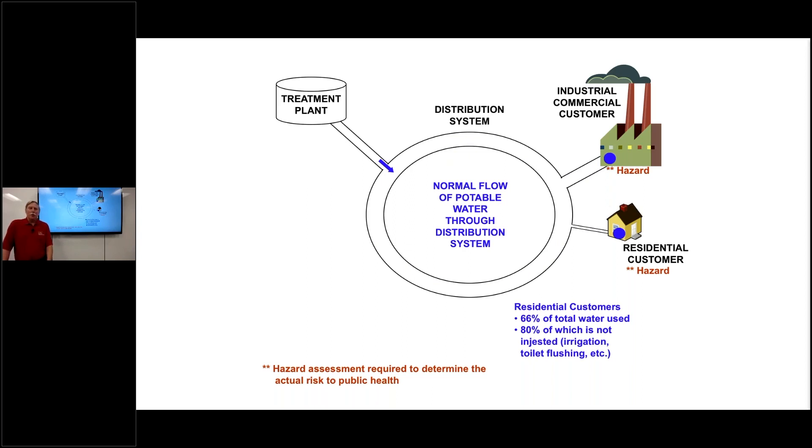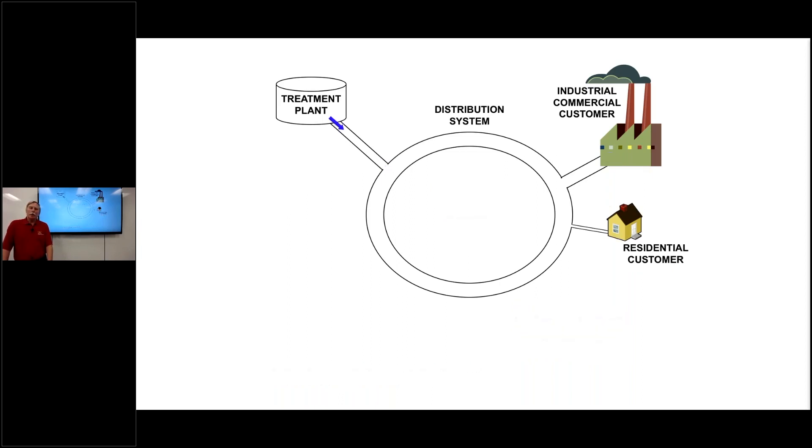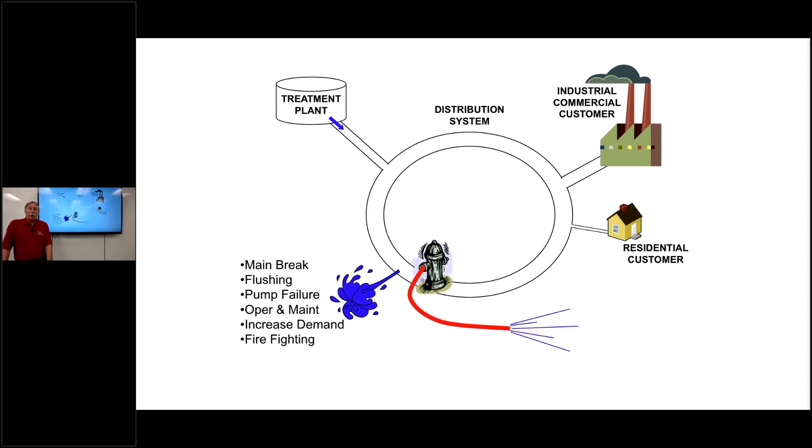Complex distribution systems, grids, et cetera, make this look very simplistic. But what we really wanted to show is, in this case, there are times when the distribution system could be compromised. So now as we show that distribution system, and there is something that occurs, there's a leak in the system, main breaks, we could have flushing operations, pump failures, other operation and maintenance issues. We may have increased demand at any point, such as a firefighting effort. And I think most would recognize these are common day-to-day operational issues within a water distribution system.